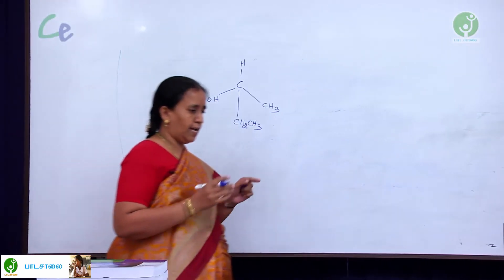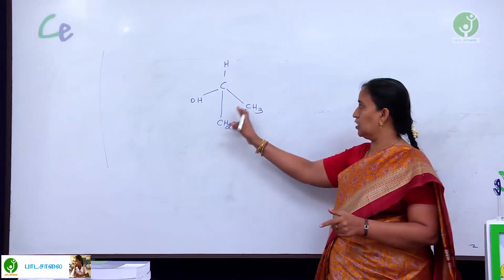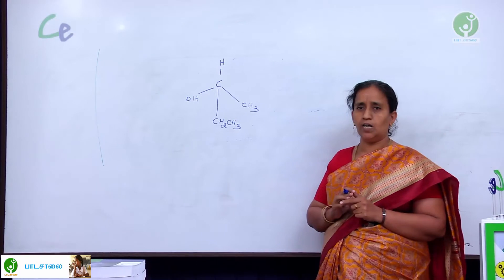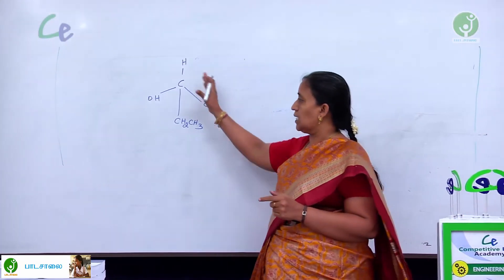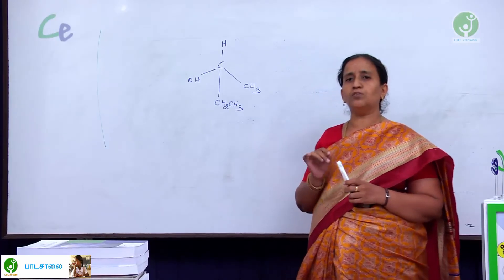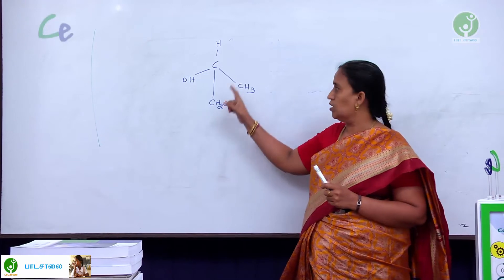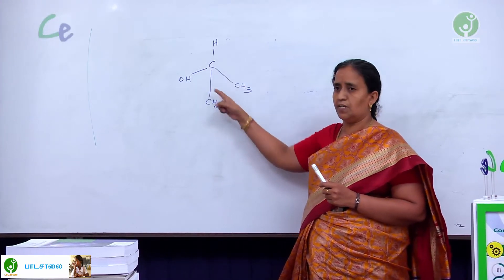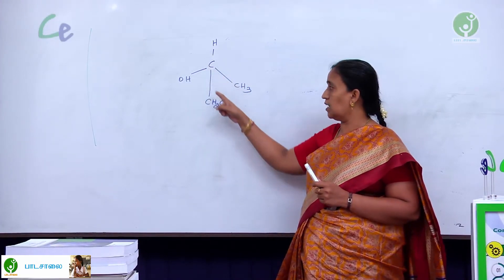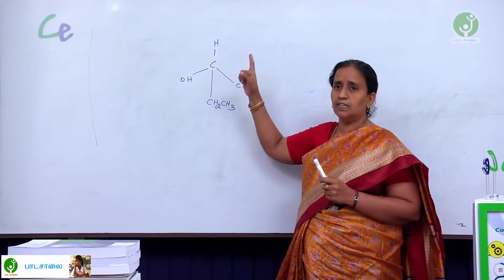Now, if you are provided with the polarimeter definitely you are going to tell whether this is optically active or inactive. Now, in the classroom situation how we are going to identify whether the given compound is optically active or inactive? Check whether this is having a chiral center. Yes, this is having a chiral center because all the four groups surrounding carbon are different.